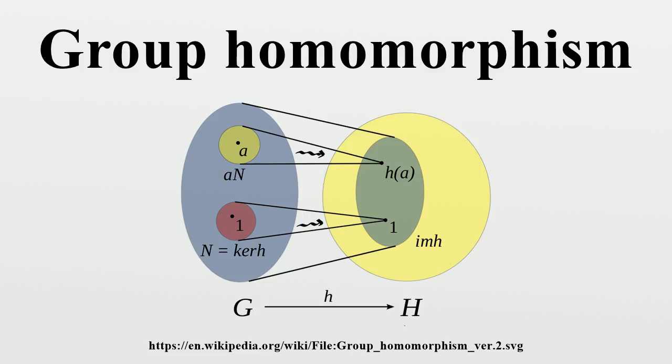As an example, the automorphism group of (Z, +) contains only two elements: the identity transformation and multiplication with minus one. It is isomorphic to Z/2Z.